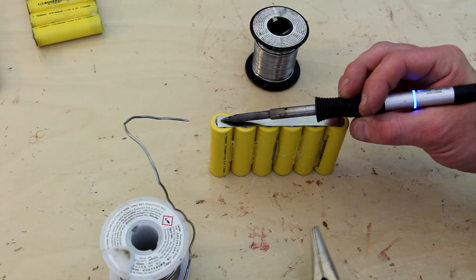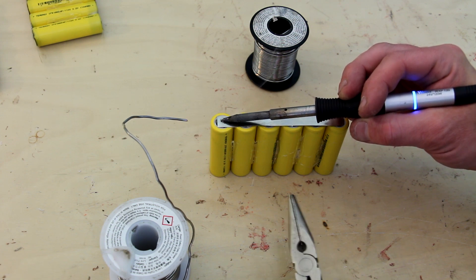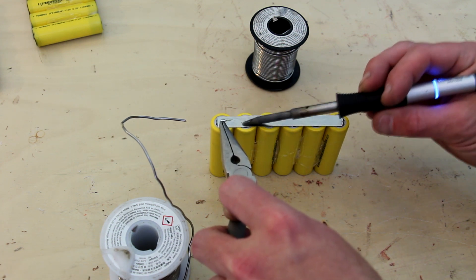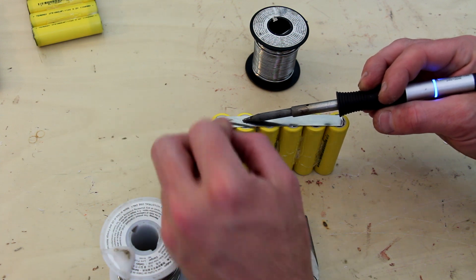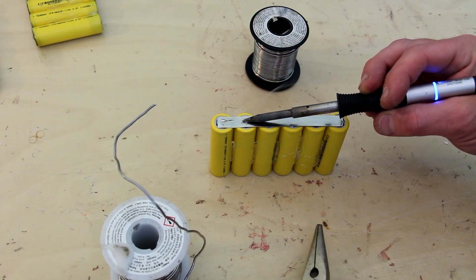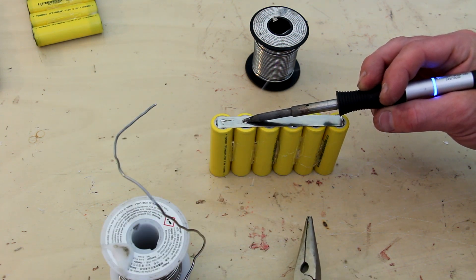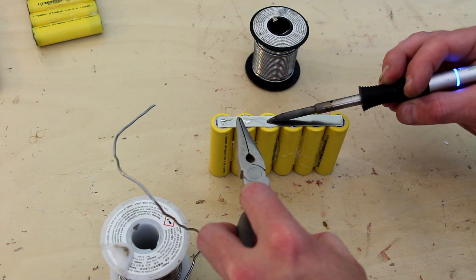Soldering paste is a convenient way to get both solder and flux in between your batteries and the strip. Make sure to wipe off any excess so it doesn't work its way down the cell and possibly short it out. Then drop your nickel strip over the battery and then solder it in place.